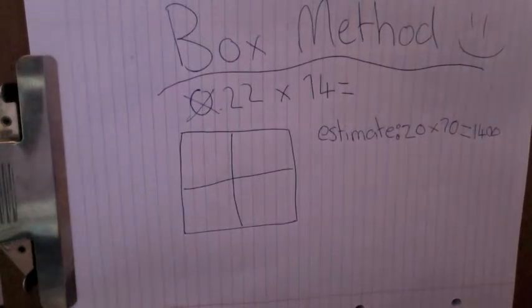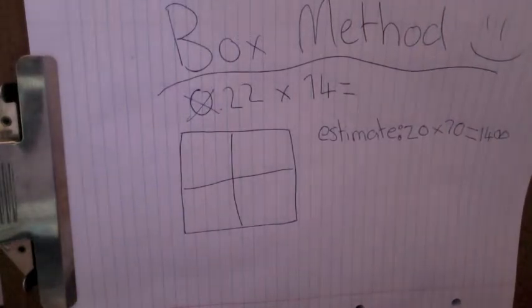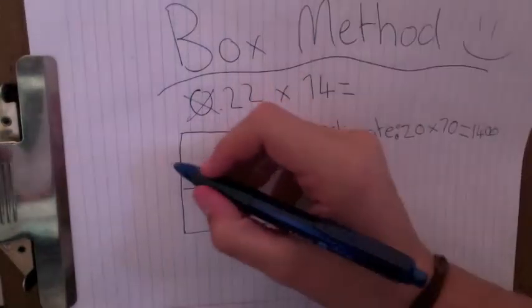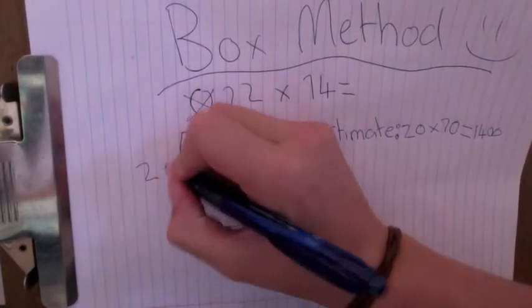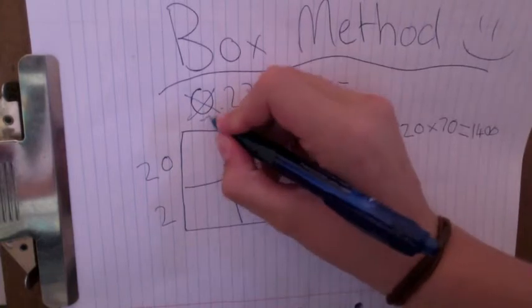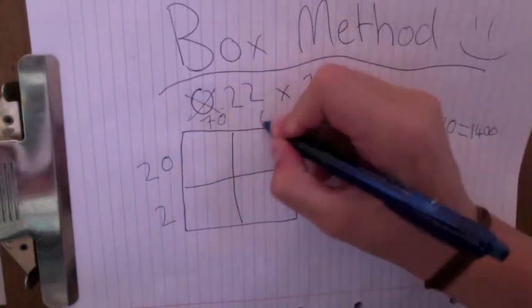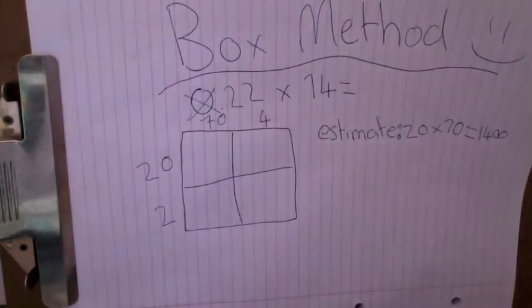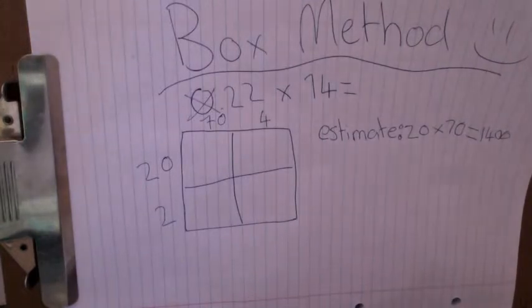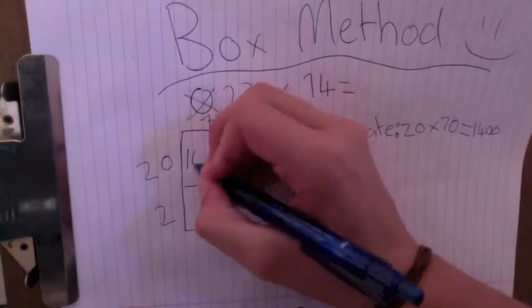So now we need to split 22 and 74 into place value. So what we do is we go 20 and 2, 70 and 4. Now we go 20 times 70 and that's 1,400.